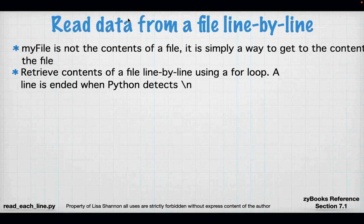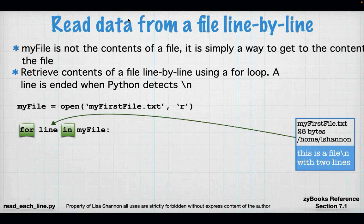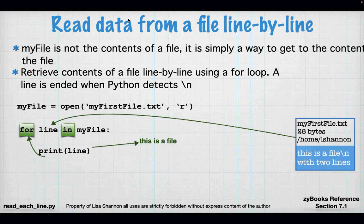You can also retrieve the contents of the file line by line using a for loop. A line is ended when Python detects a newline. I have my open statement, and then I say `for line in my_file`. This is a for loop — I've done this with `range` and with lists; now I can do it with a file. Python knows that when the right-hand side of `in` is a file descriptor, you want each line individually. The first line it prints is 'this is a file', then it goes back up, gets another line, and prints 'with two lines'.